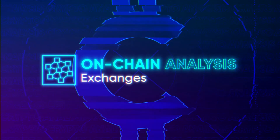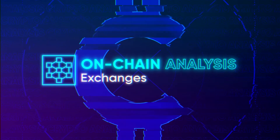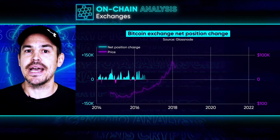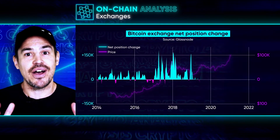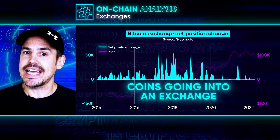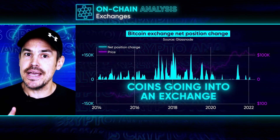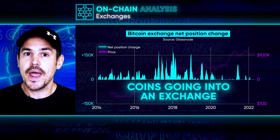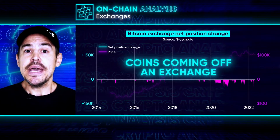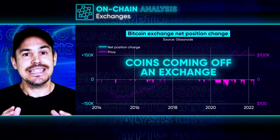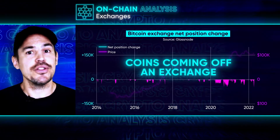Next up is exchanges. The on-chain data shows us the movement of coins to and from the big exchanges. When coins go onto an exchange, that gives us an indication they may be doing so in preparation for a sale. And when coins come off, people may be putting them into cold storage and are less likely to sell them in the short term.